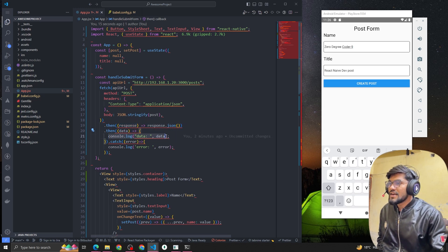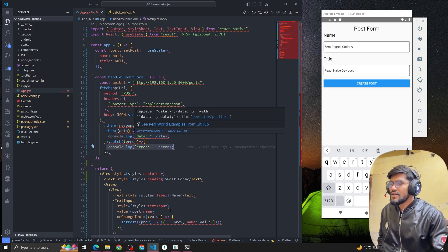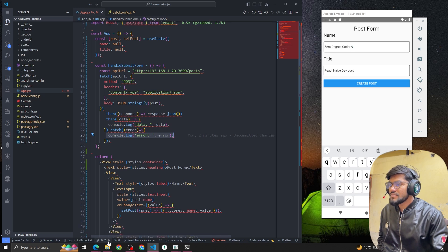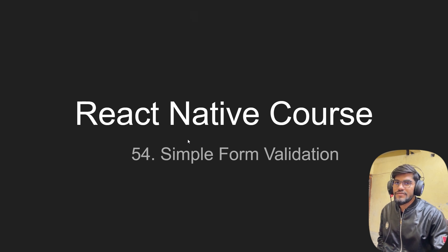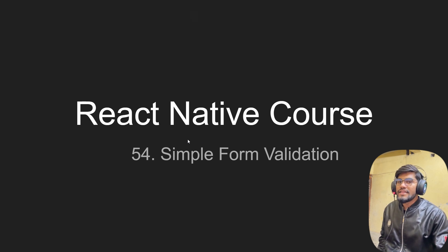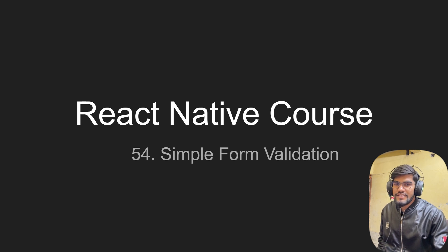Once we get the response we convert it to JSON and console.log the data. If there's an error it goes to the catch block. In the next video we're going to see how to add validation to a form. Thank you everyone, see you in the next video — please let me know if you have any questions. Thank you, bye!